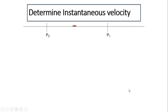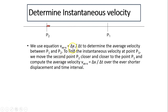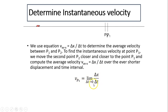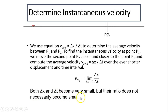Consider a car moving from P1 to P2. To determine instantaneous velocity, let's first look at average velocity. We use the equation V-average equals delta X over delta T to determine the average velocity between P1 and P2. To determine the instantaneous velocity at P1, we move P2 closer and closer to P1 and compute the average velocity over ever-shorter displacement and time intervals. Both delta X and delta T become very small, but their ratio does not necessarily become small.